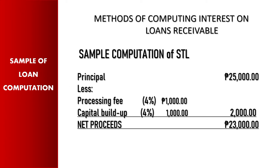Let's compute the net proceeds of your short-term loan. First, we have the principal of 25,000. Items to be deducted are: the processing fee of 4%, which is 1,000, and the capital build-up of 4%, which is also 1,000 — a total deduction of 2,000. So your net cash proceeds would be 23,000 pesos.